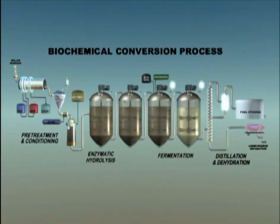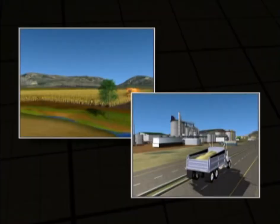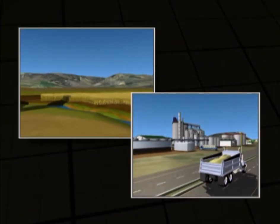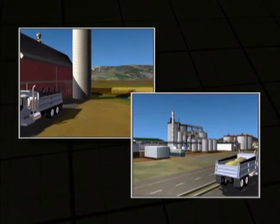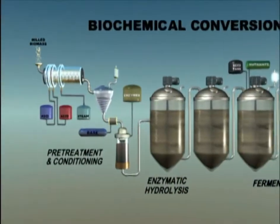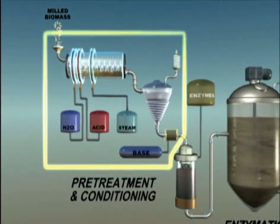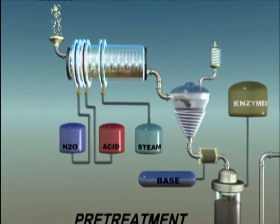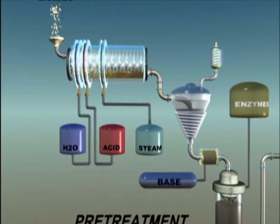Here's one example of a biochemical conversion process. After biomass is collected and transported to the processing facility, it undergoes a pre-treatment process so the components of the biomass are easier to break down with enzymes in the subsequent steps.